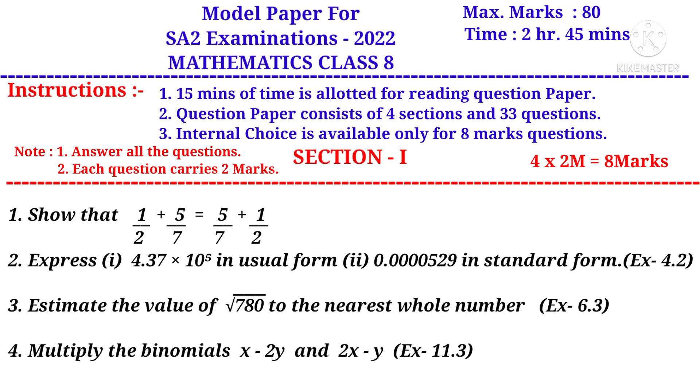Number 4, multiply the binomials x - 2y and 2x - y. It is a question from the 11th chapter.